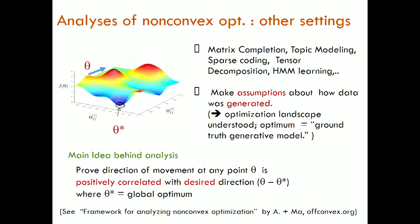This framework is not written in any single paper. When Tengyu Ma was a student here, we looked at some of these papers and figured out this framework, and it's written up in a blog post at offconvex.org. This is how we know how to analyze non-convex optimization, and you can see that this strategy can only work when you understand something about the landscape.